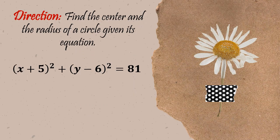Here's our first example. As you can see, what kind of equation is this? This is in center-radius form. To help us find the center and radius easily, we may write first our guide — rewrite the format of our center-radius form: (x minus h) squared plus (y minus k) squared equals r squared. With this, you may now identify what is your h, what is your k, and what is your r.